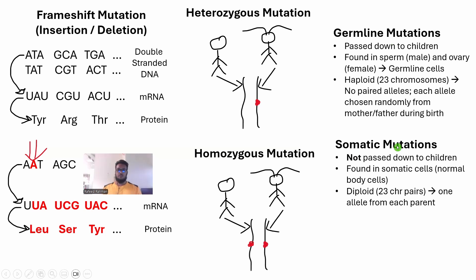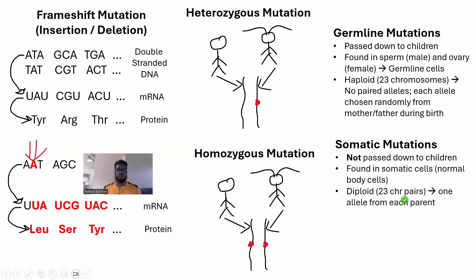Somatic mutations, by contrast, are not passed down to children. They are found in somatic cells — everything except germline cells. All the somatic cells in our body are diploid, and we get one allele from each parent in these pairs.